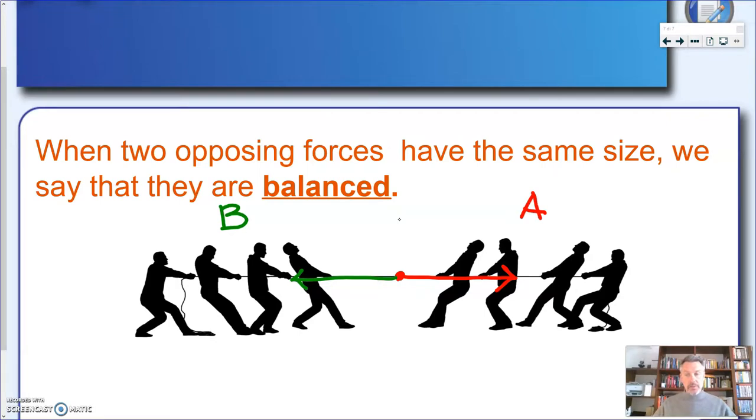In order for the teams and the rope to move, you need one of the forces to become bigger. Or as we say, we need the forces to be unbalanced. And this difference between balance and unbalanced force will be critical for our next lessons.